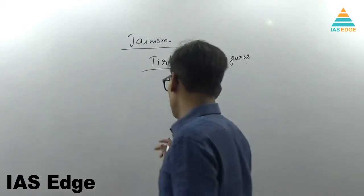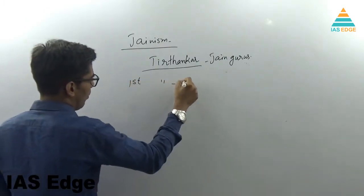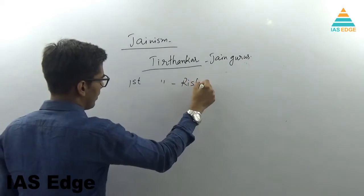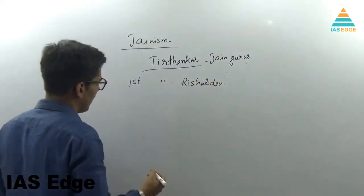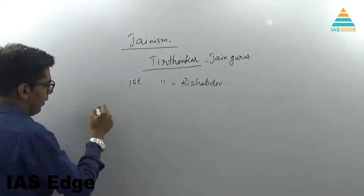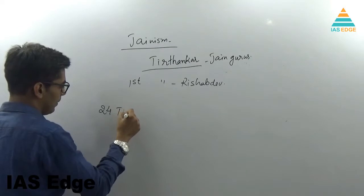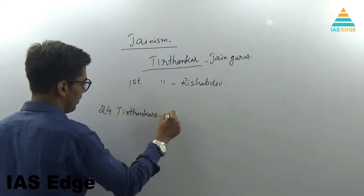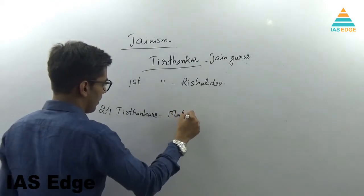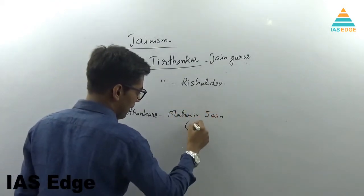So the first Tirthankar was Rishabh Dev, and there have been 24 Tirthankars. Mahavir Jain was the 24th and the last.